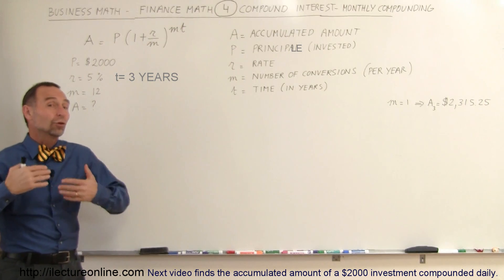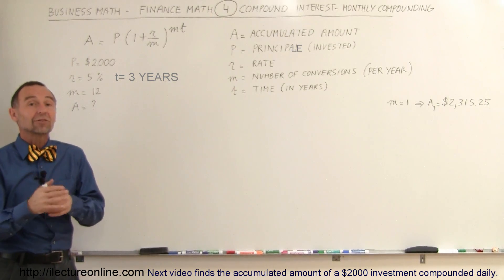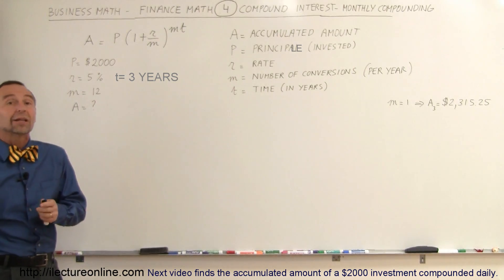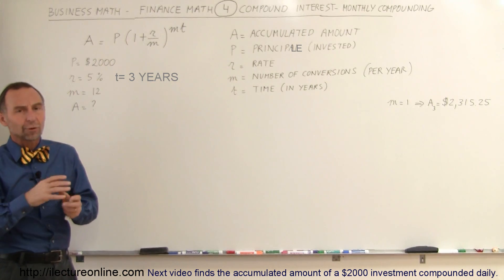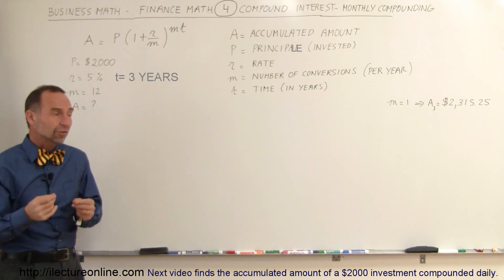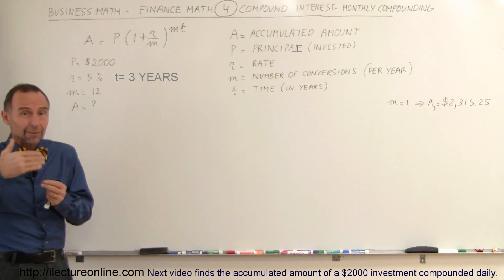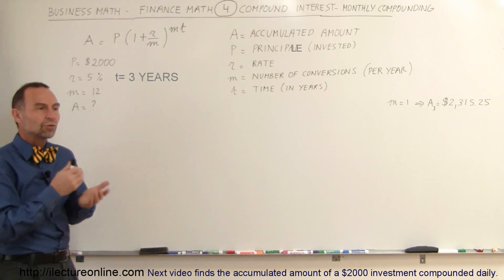One of the ways in which banks used to lure customers is to advertise that they would compound monthly rather than yearly. Back in the days before we had computers and fancy calculators, it was a lot of work to keep on calculating how much interest was earned.